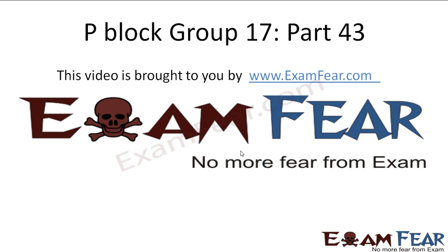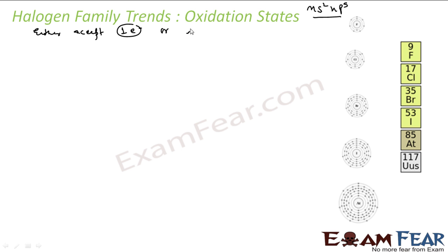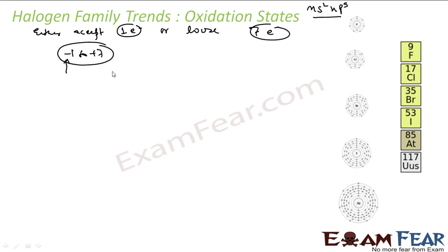Hello friends. This video on P-Blog part 43 is brought to you by examphia.com. Let's talk about the oxidation states. For the halogen family, the electronic configuration is NS2NP5. That means it either accepts one electron or loses 7 electrons. So technically, minus 1 to plus 7 is a possible oxidation state — it will accept one electron to get minus 1, or lose 7 electrons to get plus 7.